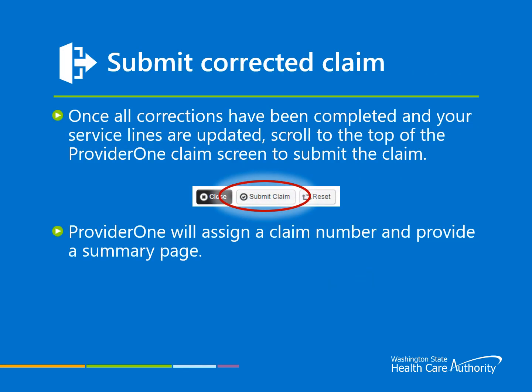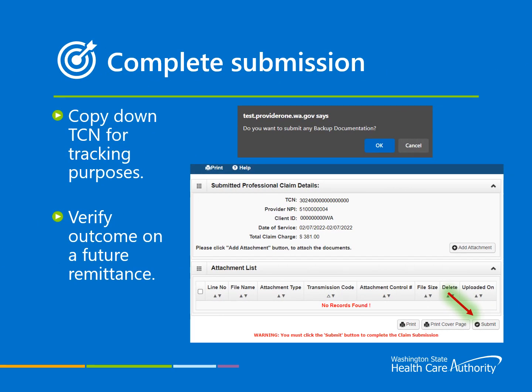If all your Medicare items have been added to the service lines, click the Submit button at the top of the claim form. A pop-up box will appear asking if you have backup documentation to submit with the claim. This is not necessary as you have entered the Medicare information onto the claim — click Cancel on this pop-up. The final confirmation screen will appear and provide you with basics for the claim such as the new TCN, NPI, client ID, date of service, and total claim charges. Write down your claim number for tracking and proceed to the Final Submit button, which will need to be clicked to finalize the claim submission.